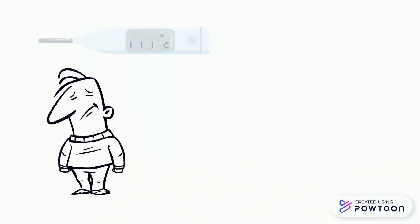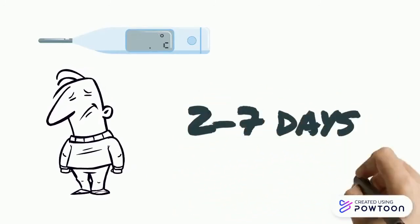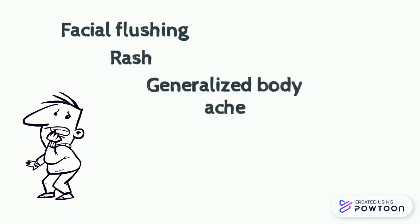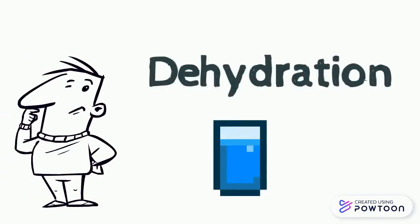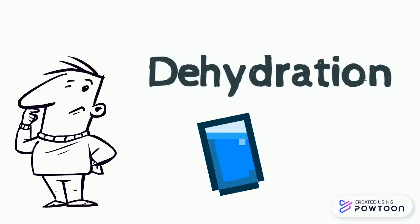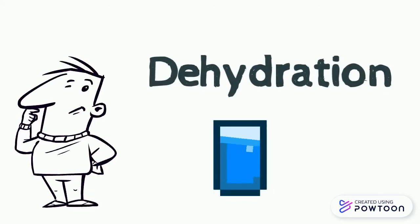First phase is the febrile phase. The patient will have acute high-grade fever for 2 to 7 days, often accompanied by facial flushing, rash, generalized body ache, vomiting, and headache. I will suspect febrile phase Dengue fever in Malaysia if the patient comes with fever with arthralgia and myalgia, which means pain in the joints and muscles. In the febrile phase, they can present with warning signs, which I will discuss later. In this phase, you are more worried about dehydration.